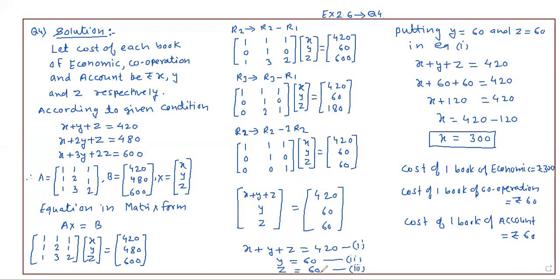We have the value of y and z equal to 60 and 60. Substituting into the first equation: x plus 60 plus 60 equals 420. So x plus 120 equals 420, which gives x equals 300. Therefore, the cost of one book of economics is Rs. 300, the cost of one book of cooperation is Rs. 60, and the cost of one book of account is Rs. 60.